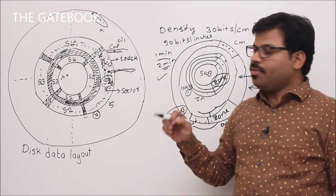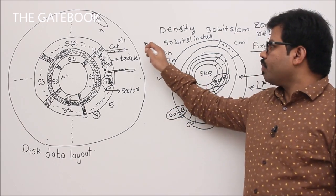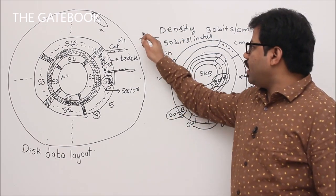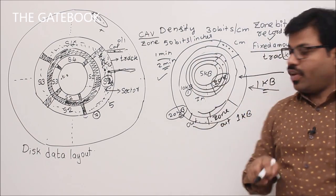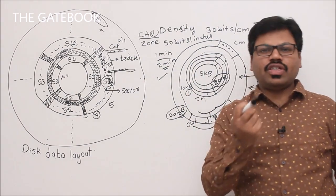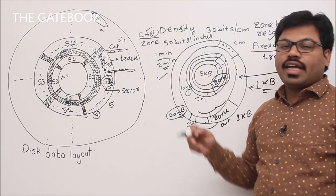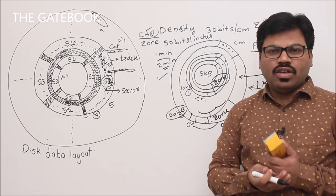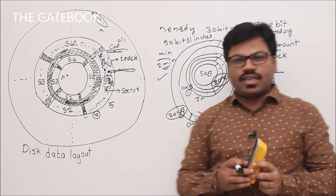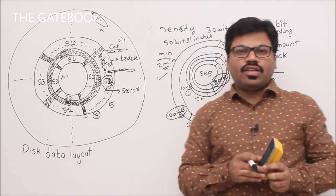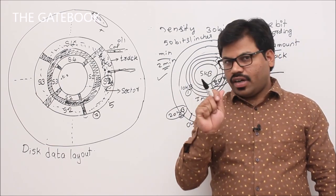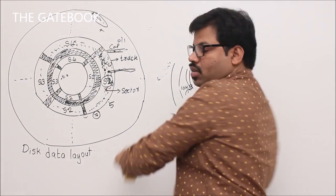So there are two models: constant angular velocity (CAV) recording — where every track stores the same fixed amount of data — and zone bit recording. In the GATE exam, if no model is specified, follow the first method: every track stores the same amount of data.